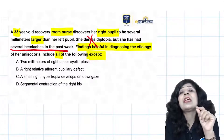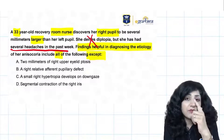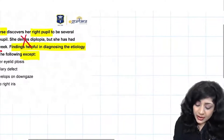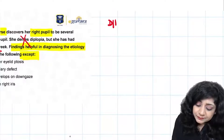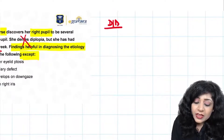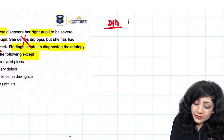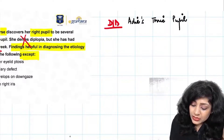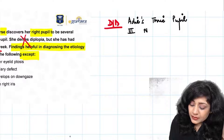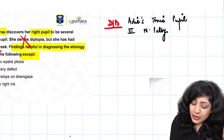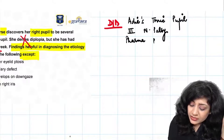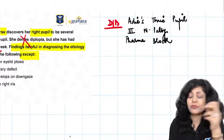This patient has anisocoria where the pupil is dilated. We have three things in mind as differentials: number one is Adie's tonic pupil, number two is third nerve palsy, and number three is pharmacological blockade. These are the three diagnoses we are considering.